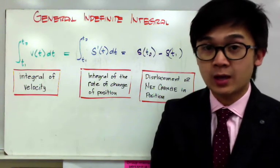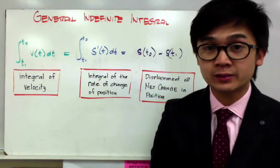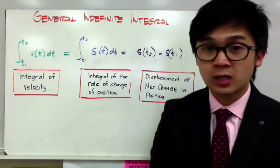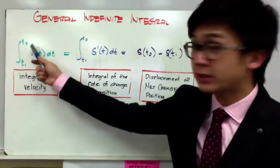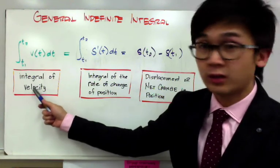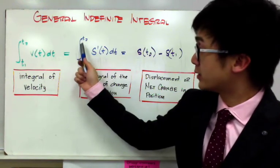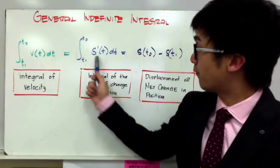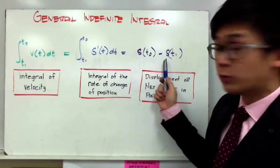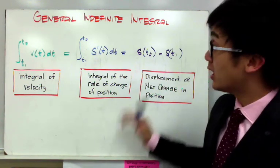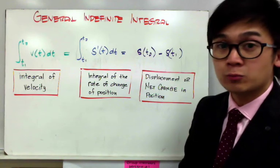These are the notations we're going to use in our lesson today. We're going to be answering word problems involving integrals in finding distance or approximated distance and net change in word problems of an object moving on a straight line. We have v(t) dt from t1 to t2, which is the integral notation for velocity, equal to s'(t) dt from t1 to t2 — the integral of the rate of change of position — which can also be written as s(t2) minus s(t1), giving you the displacement or net change in position.